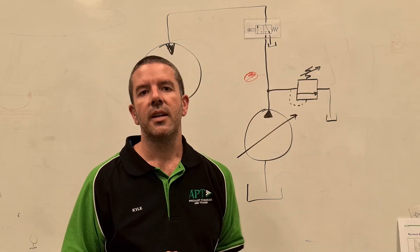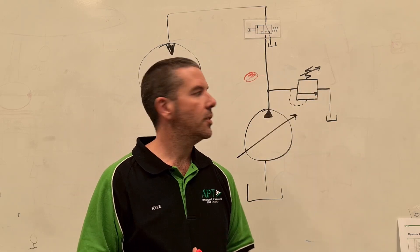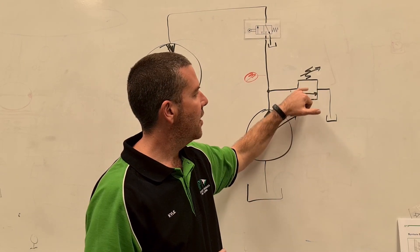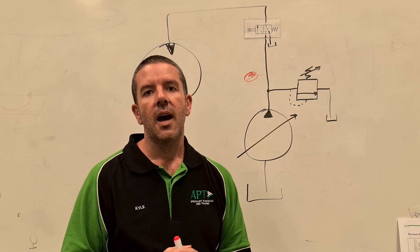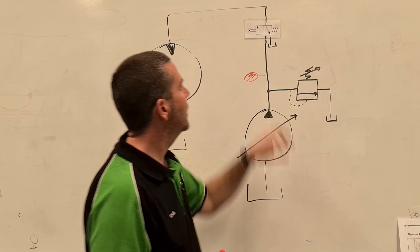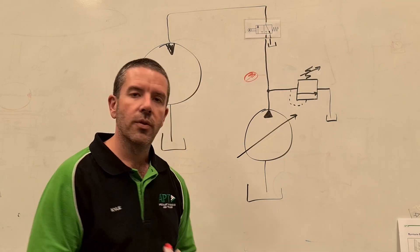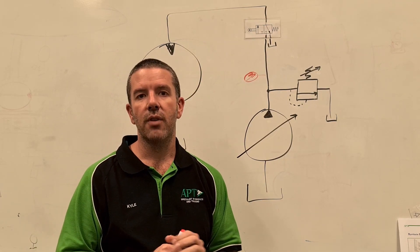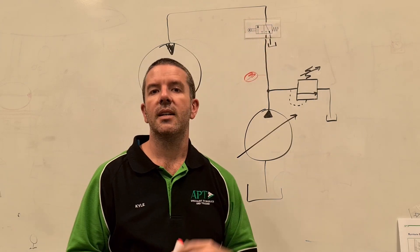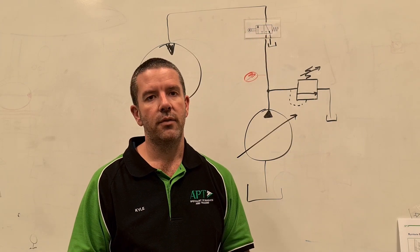A single box is a pressure or flow control of some sort. In this particular case, it's a normally closed valve because the arrow does not line up with the lines, so this is a relief valve or a pressure control valve of some sort. Two boxes or three boxes or more means a directional valve of some sort, and each box represents a particular state or a flow path through that valve.